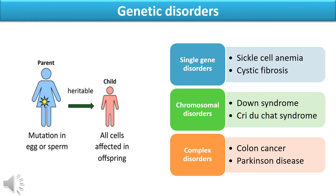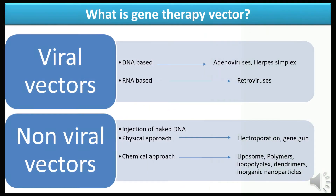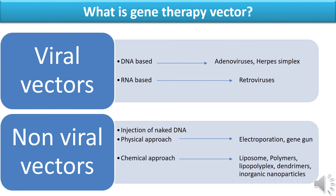As you can see in this diagram, if the mutation has occurred in the sperm or egg, then it must be heritable and all of the child's cells will be affected. Regarding gene therapy vectors, vectors are the carriers — a transport system or vehicle through which we carry our desired healthy gene to the targeted cell. There are two basic types of vectors: viral vectors, also called biological vectors, and non-viral vectors, which are further divided into physical vectors and chemical vectors.